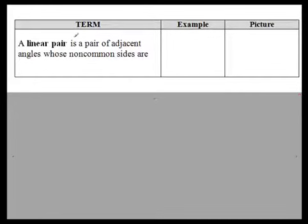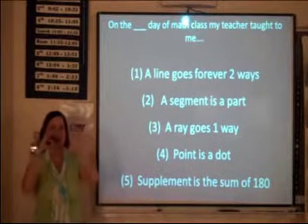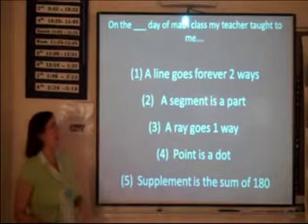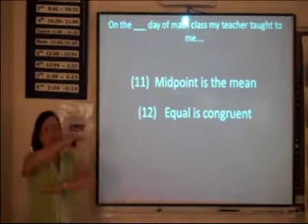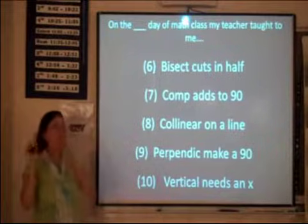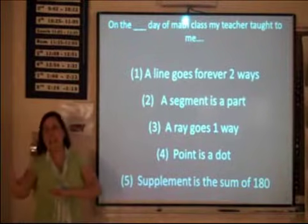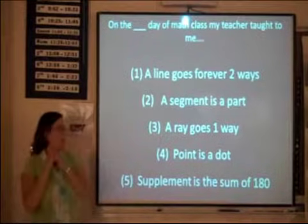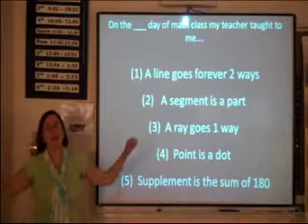A quick mnemonic — the 12 days of math class: Point is a dot, ray goes one way, segment is a part, and a line goes forever two ways. Equal is congruent, midpoint is the mean, vertical needs an S, perpendicular makes a 90, complement adds to 90, bisect cuts in half, supplement is the sum of 180.